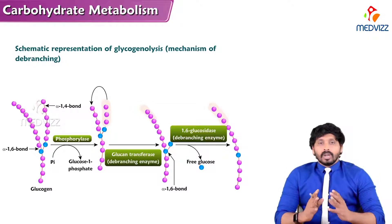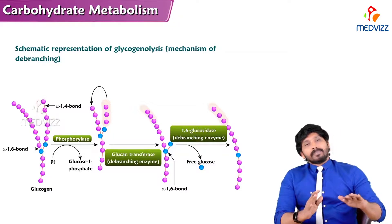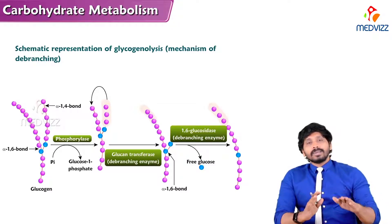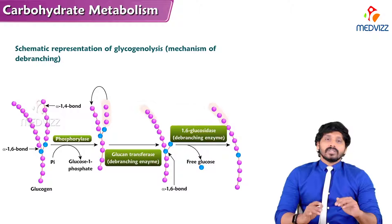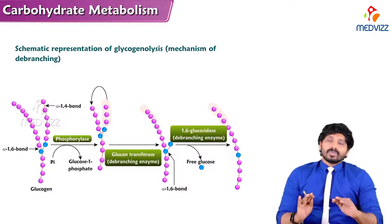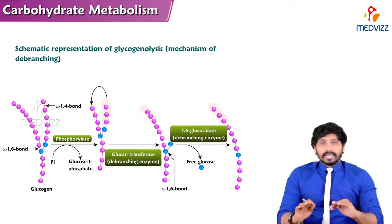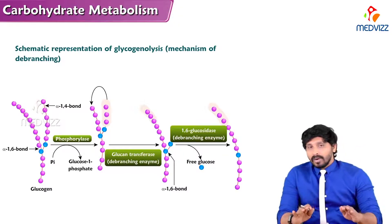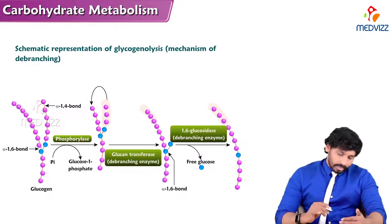To break this structure, we need enzymes which break the 1,4 glycosidic linkages and at the same time enzymes which break the 1,6 glycosidic linkage — only then will we be getting free glucose.